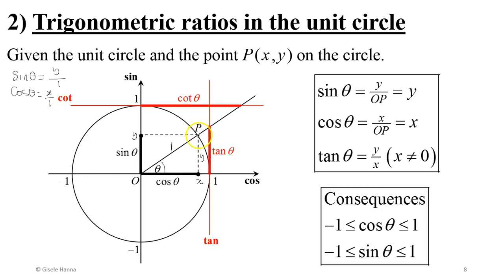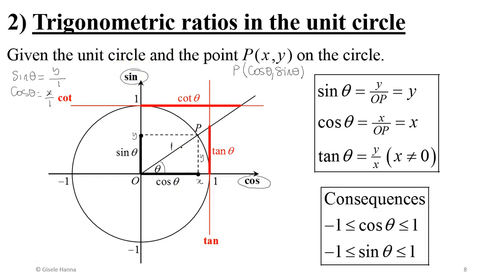Therefore, for a point P on the unit circle forming angle θ with the horizontal axis, P has coordinates (cos θ, sin θ). The orthonormal system on the unit circle has cosine as the horizontal axis and sine as the vertical axis. And of course, tan θ equals Y over X, from the definition of tangent as sine over cosine.